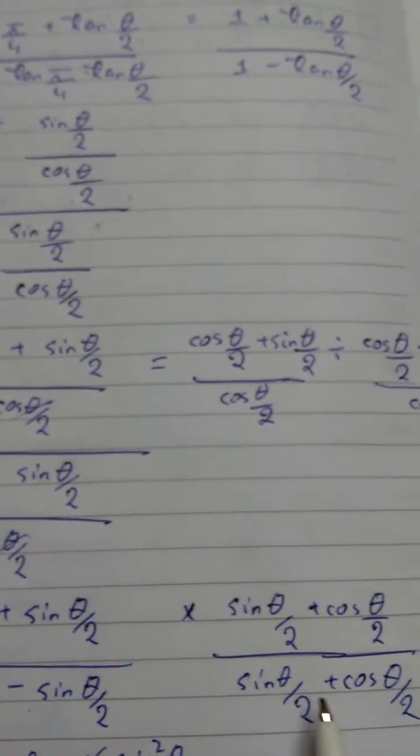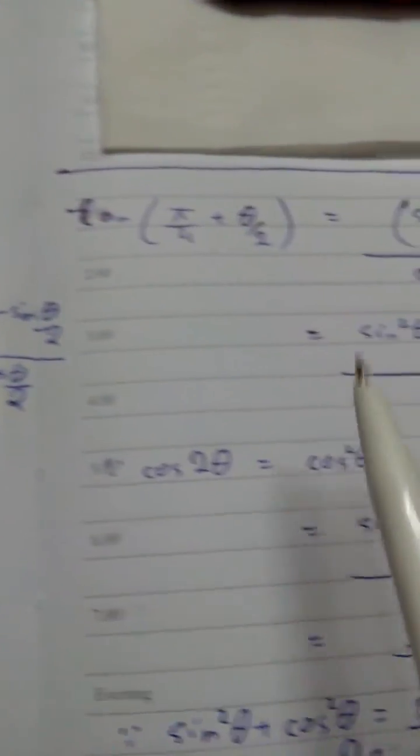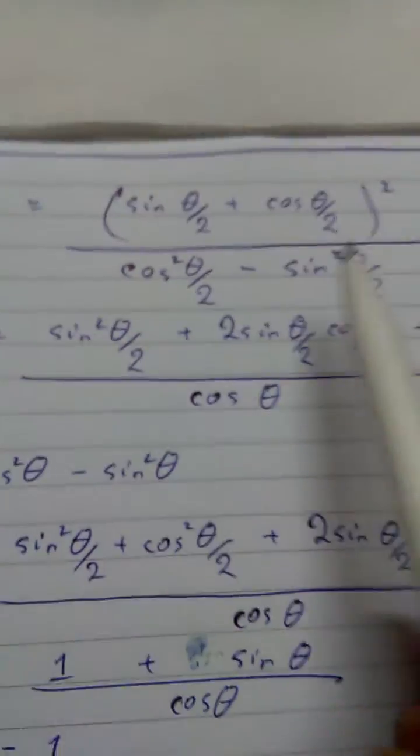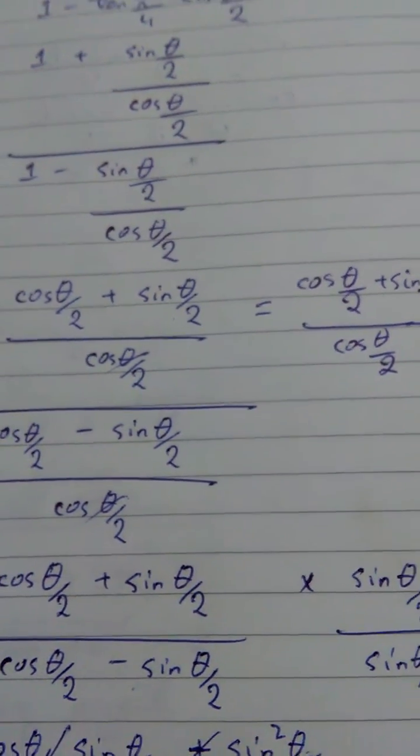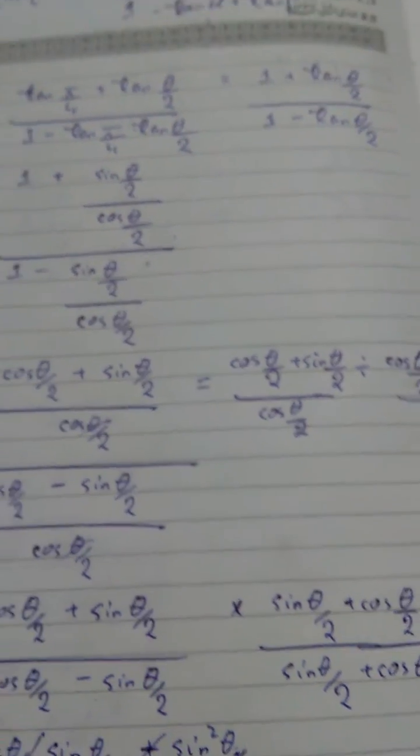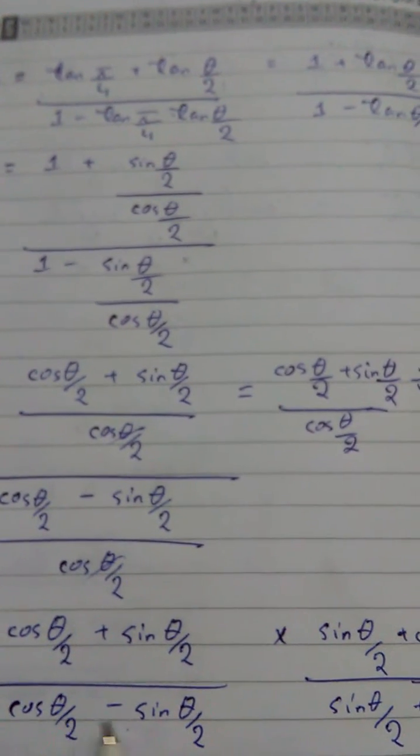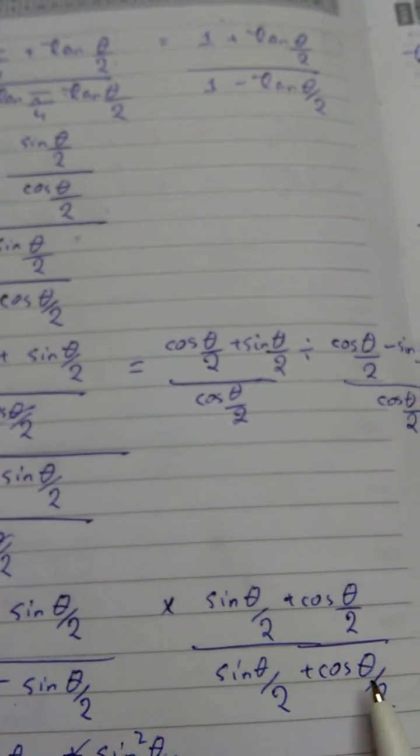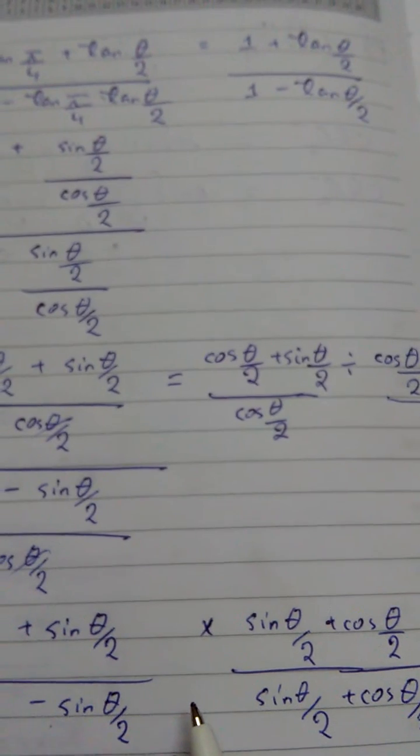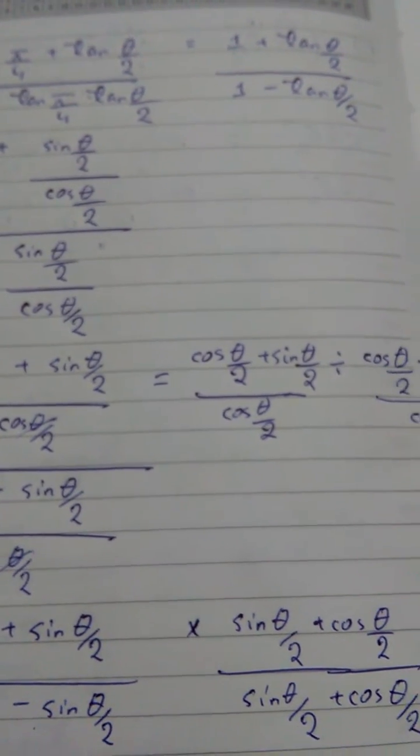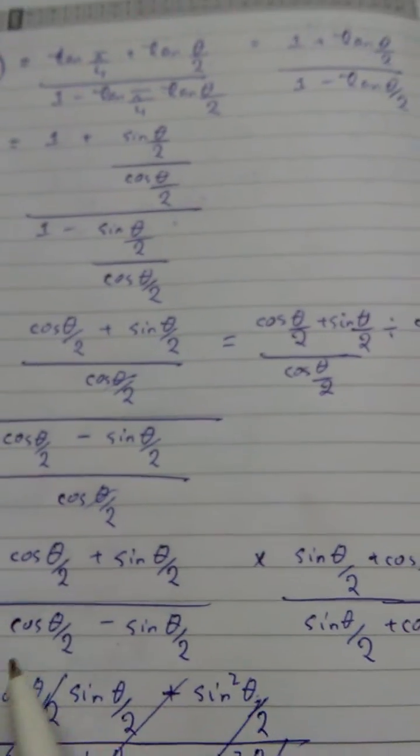Now over here you can further see that in the denominator, it seemed to be a form like this: it is a plus b and a minus b, and in the mid there is a multiplication. So you just put the formula of a² minus b² in the denominator.